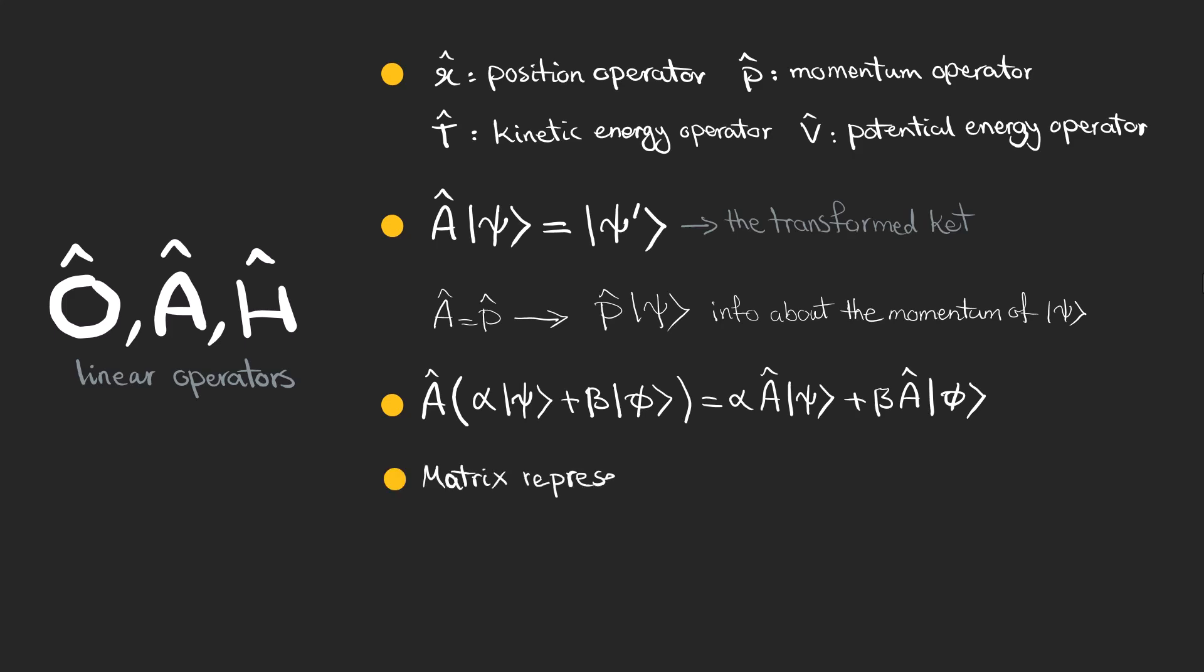In practice, linear operators can often be represented as matrices, especially when working with a finite dimensional Hilbert space. When a matrix acts on a state which is represented as a column vector, it transforms the state into a new vector.